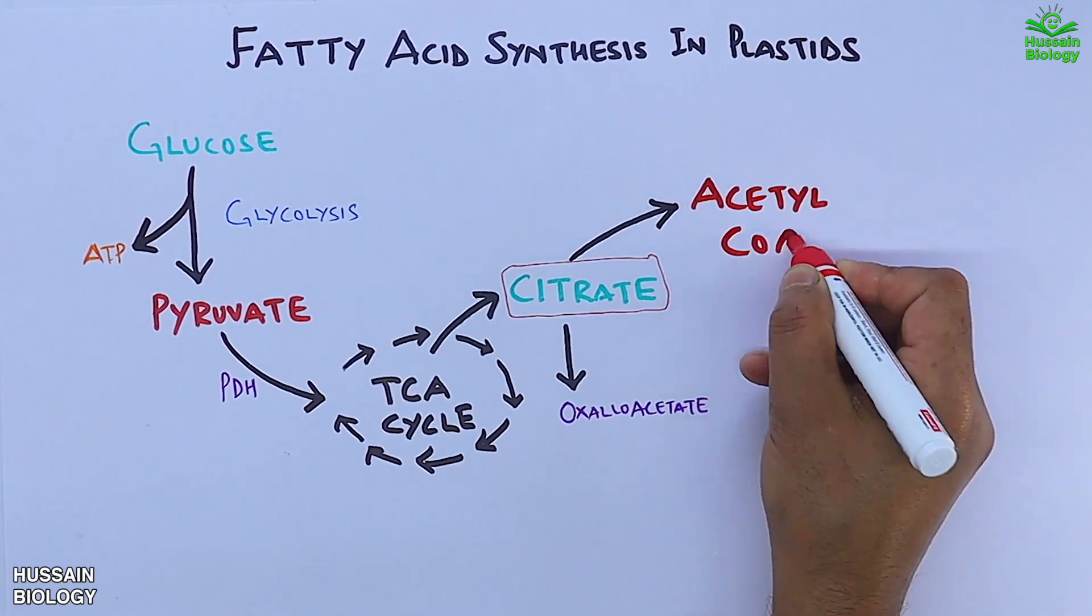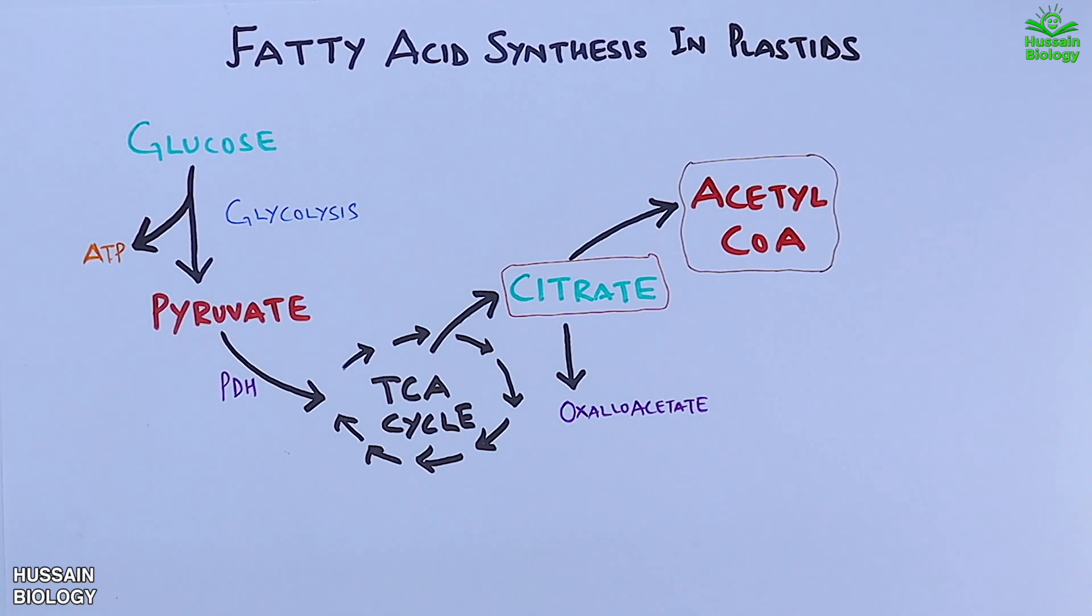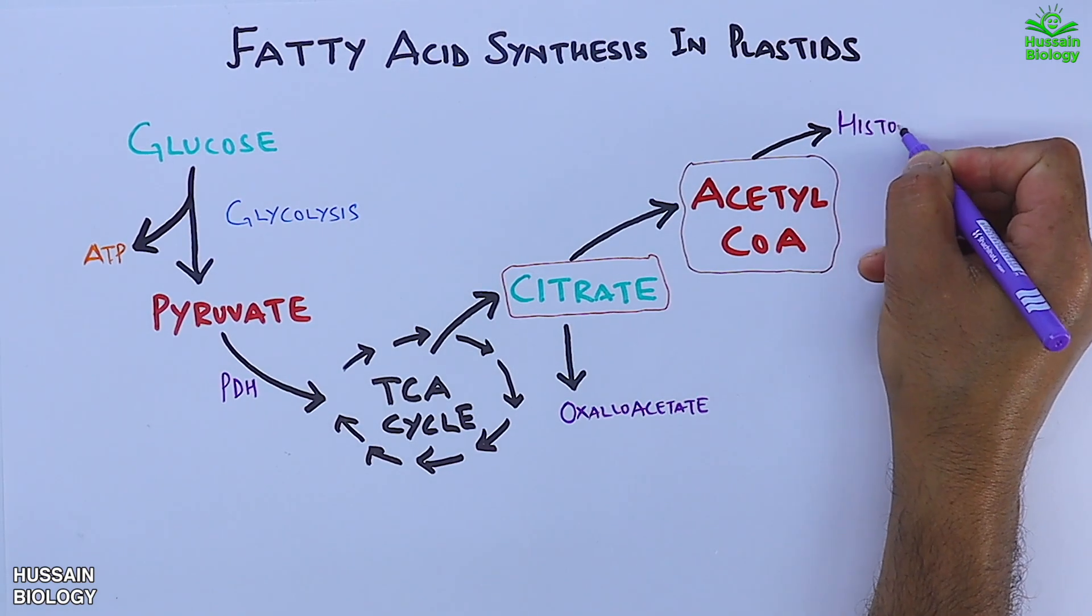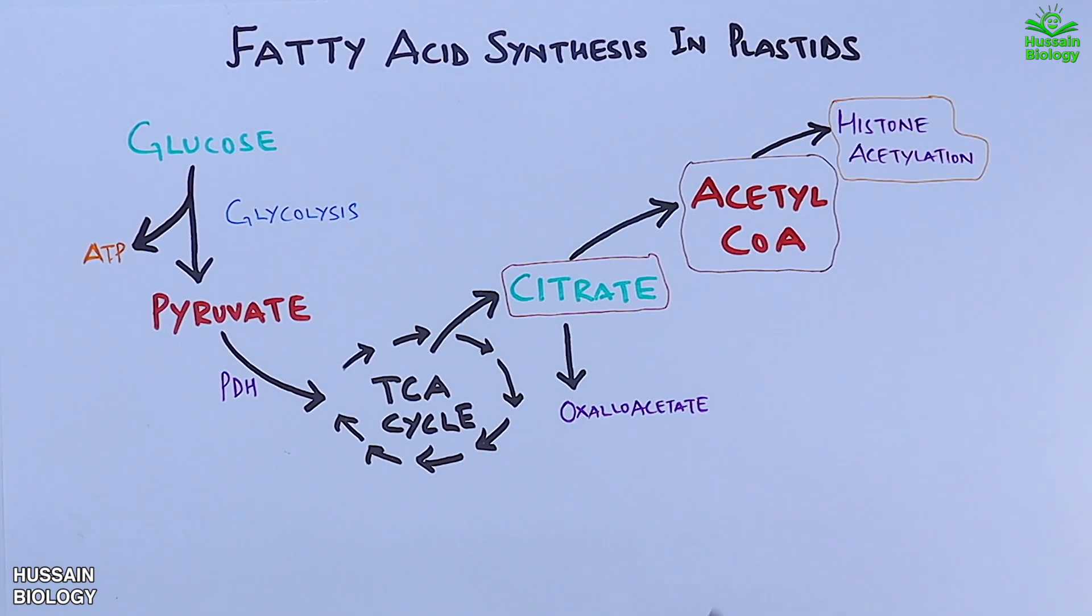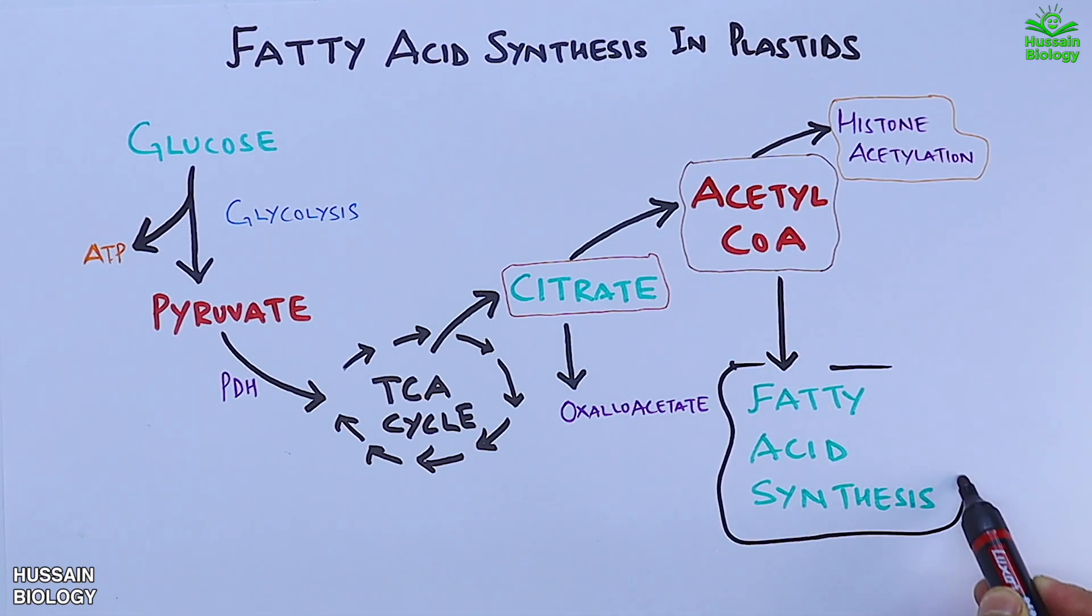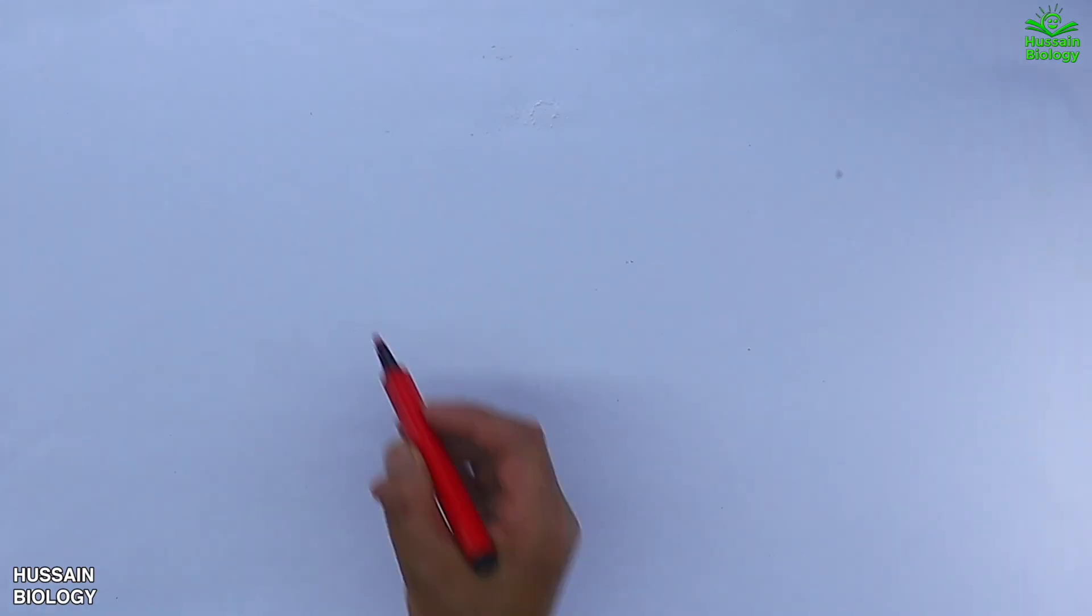We see that acetyl CoA is first transported to plastids, and from this acetyl CoA we get histone acetylation and fatty acid synthesis. Now let's see this process in detail.